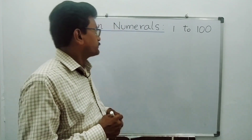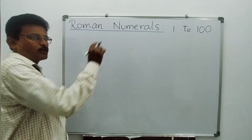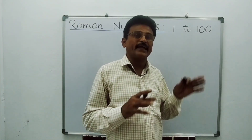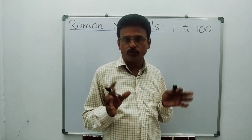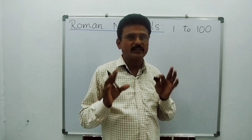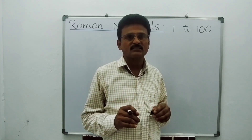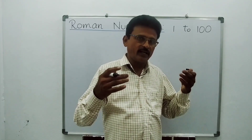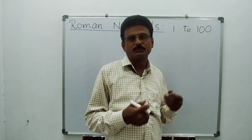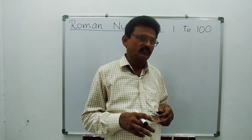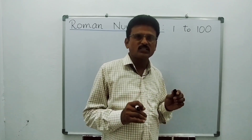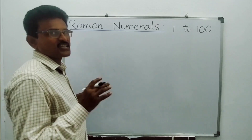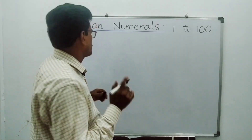Roman numerals means Romans in ancient time used English alphabet capital letters as numbers. Our Hindus and Arabs wrote numbers using 10 digits — these are called Hindu-Arabic numbers.